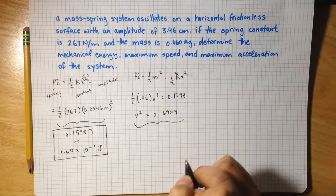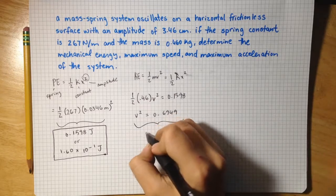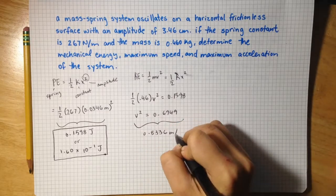Square root both sides. Putting this into the calculator, we get velocity equals 0.8336 meters per second.